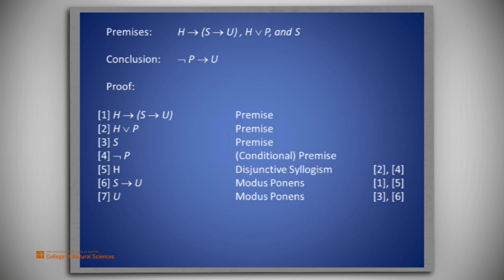We have obtained the statement U on line 7, having added the extra premise not P on line 4. Now it is time to remove that as a temporary premise, and to do that we obtain not P implies U, which is on line 8. This is called discharging the conditionalization.